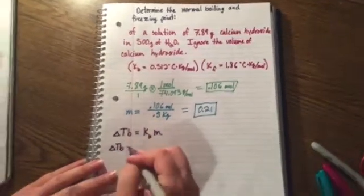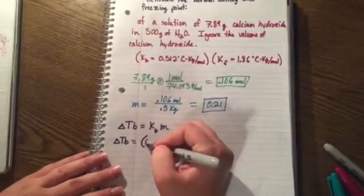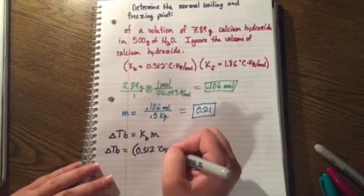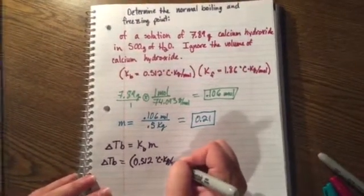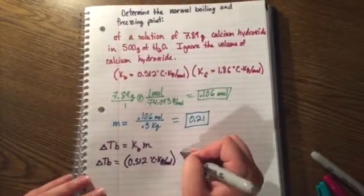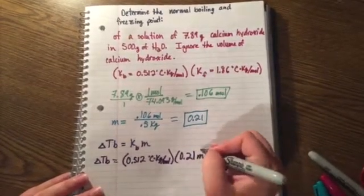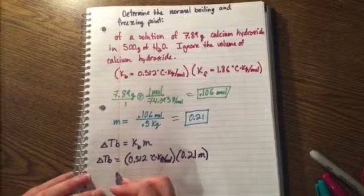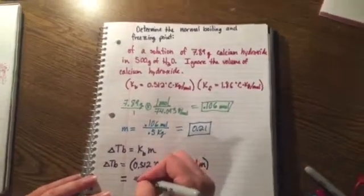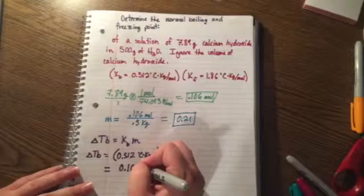So our delta Tb equals 0.512 degrees Celsius times kilogram per mole times 0.21 m for molality. You'll find that this will give you 0.107.